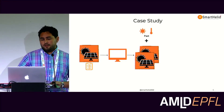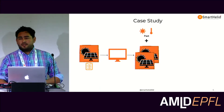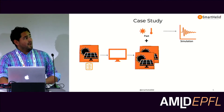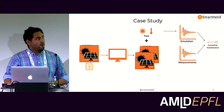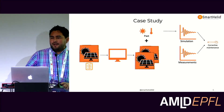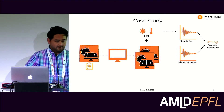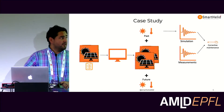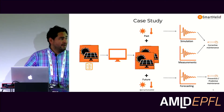This digital twin can then be mixed with weather conditions — irradiance and temperature from the past — simulated, and compared with measurements. We will have reasons for underperformance, and we can call it corrective maintenance. If we have forecasting for weather conditions, we can also do a simulation for forecasting and then do predictive and preventive maintenance.